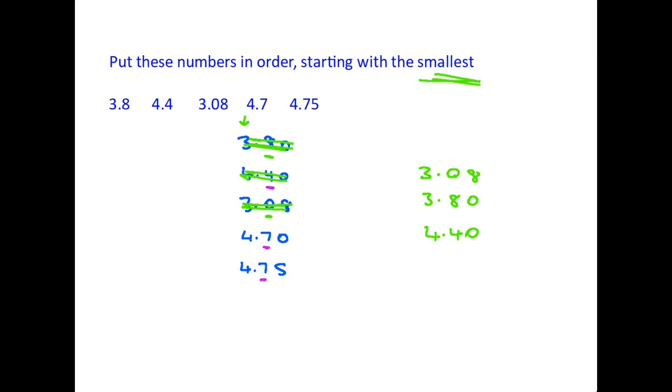That uses that one up. Now we're left with the bottom two. They are both 4.7, so we have to go to the third column. In this case we have 4.70 and 4.75. Zero is smaller than five, so 4.70 is next and 4.75 is the last number on our list because it's the largest.